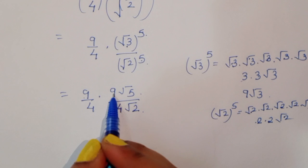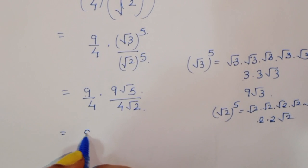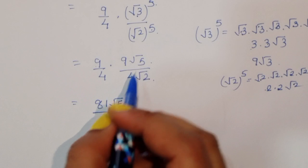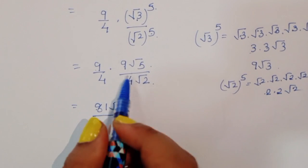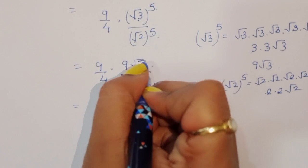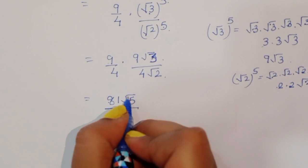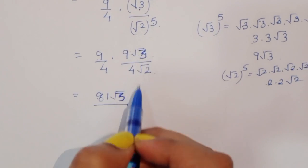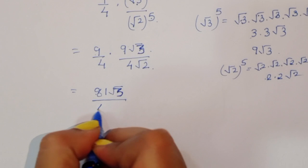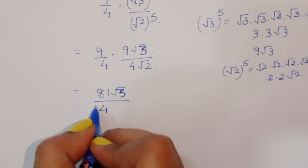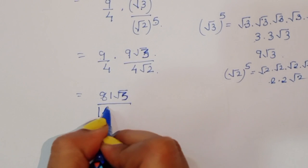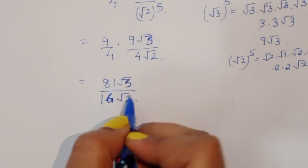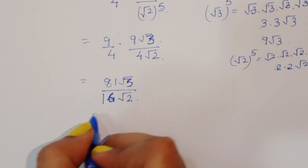Now 9 times 9 is 81, so we can write 81√3 in the numerator. In the denominator, 4 times 4 is 16, so we get 16√2. Our expression becomes 81√3 divided by 16√2.